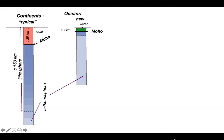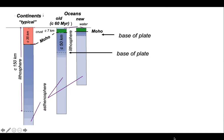Let's now look at oceans. Here's some new ocean crust, typically just seven kilometres thick, and the lithospheric mantle is rather thin beneath new crust. Contrast that with old crust, which is underlain by thicker lithospheric mantle. So the behaviour from oceans tells us that the base of the plate changes through time, presumably because the temperature of the upper mantle changes through time.